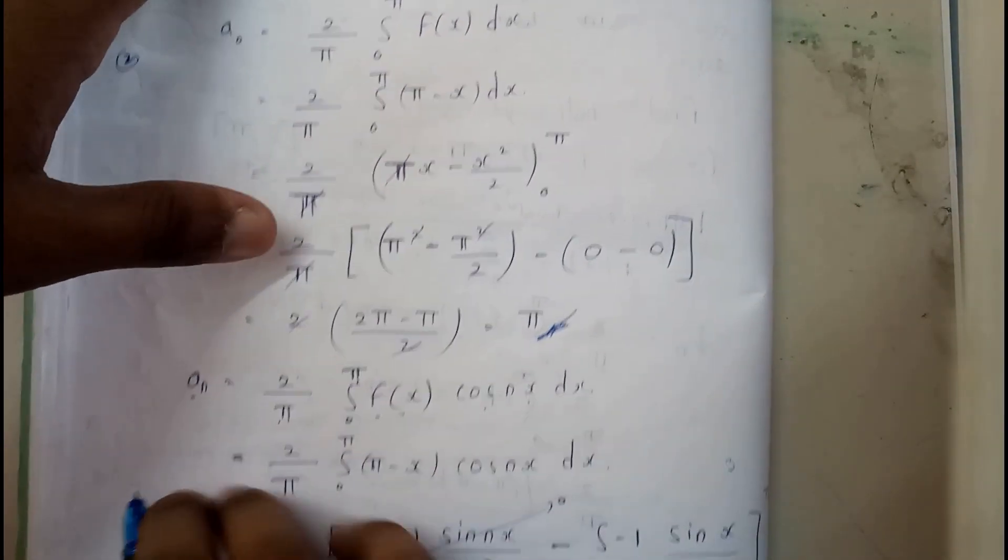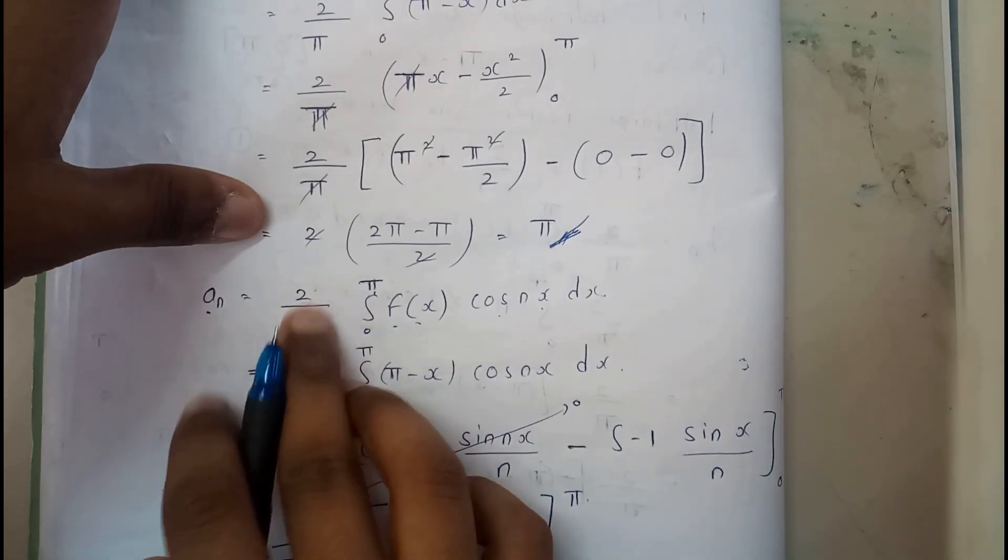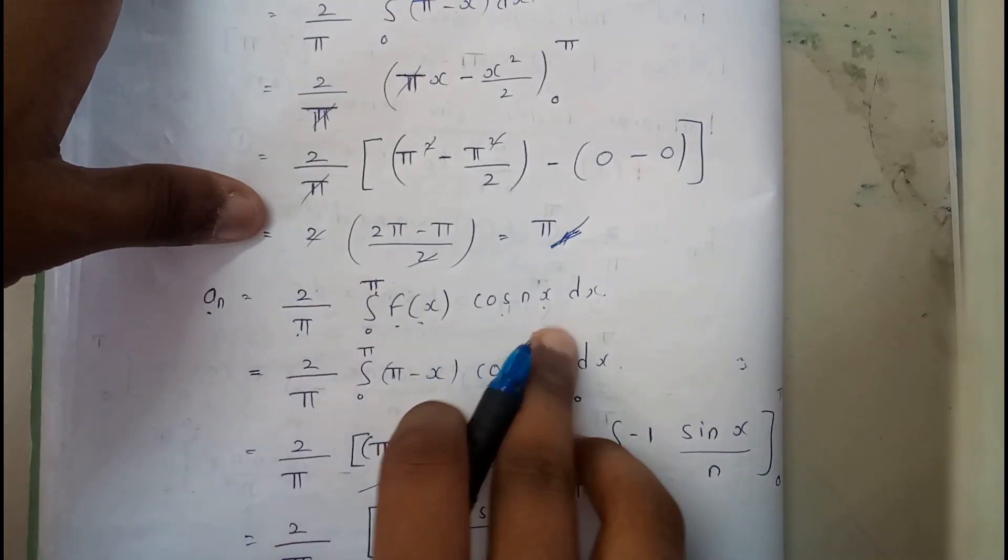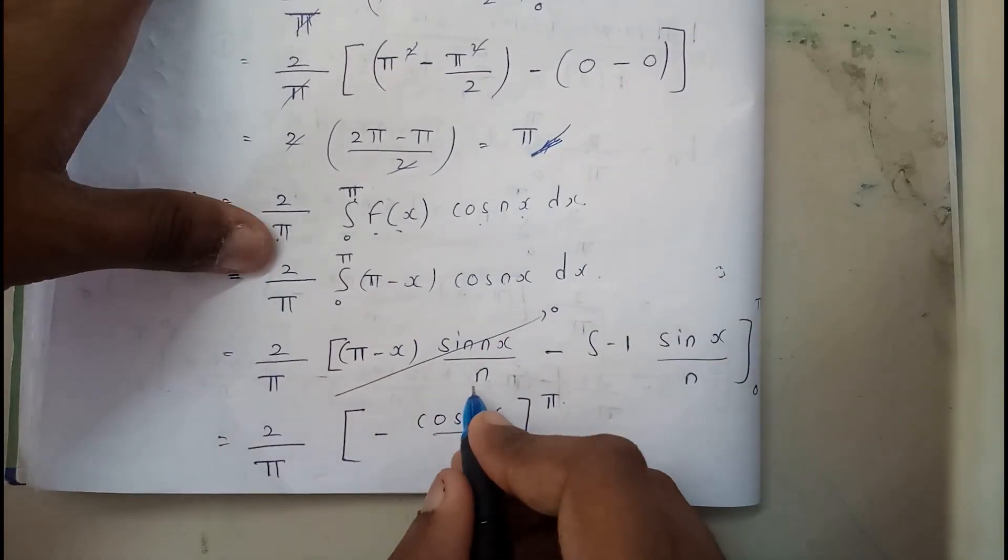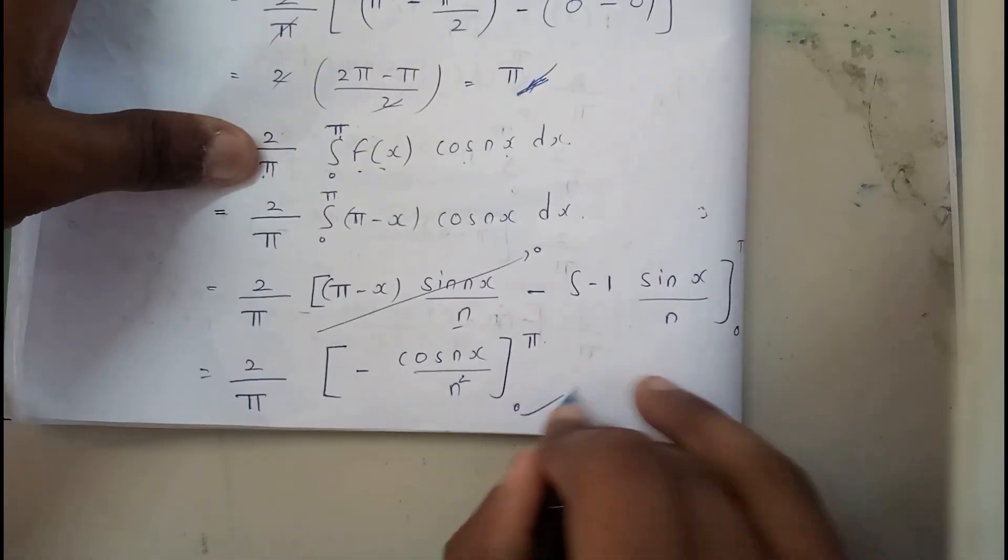So a₀ is π, and similarly we found aₙ = (2/π) ∫₀^π f(x) cos(nx) dx. We solved, we got sine here, so that equals 0. We got cosine here. So we substituted the limits.